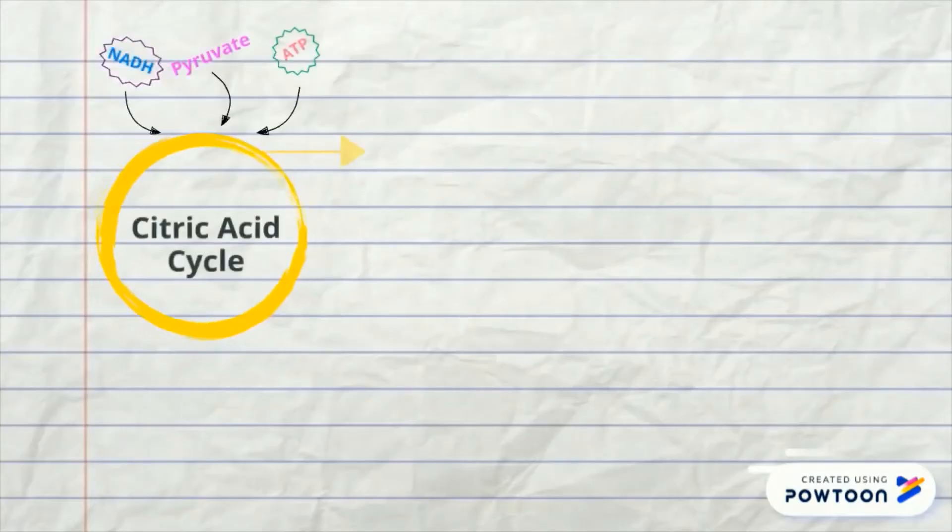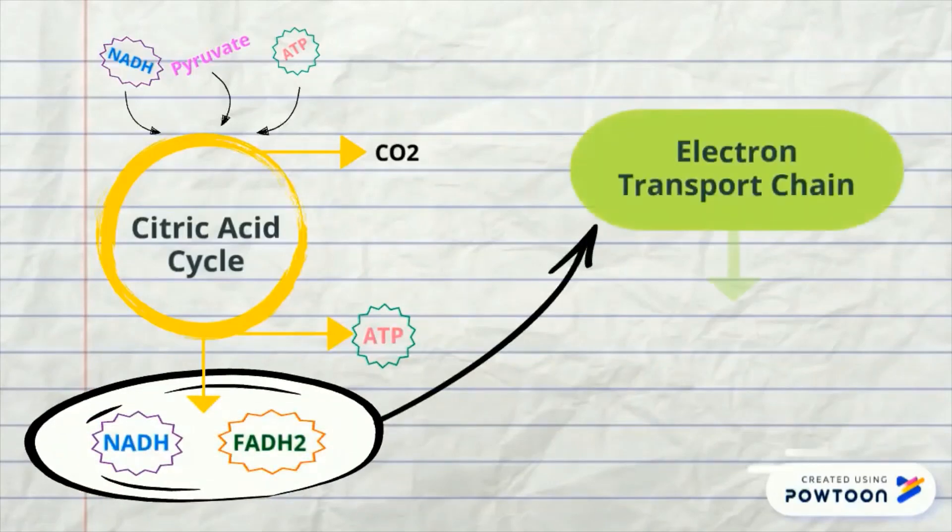Glucose produced during starvation will undergo glycolysis, producing ATP, NADH and pyruvate. As a result, these products will enter citric acid cycle. NADH and FADH2 are produced and will enter electron transport chain to produce more ATP.